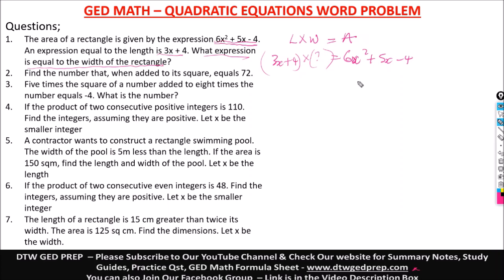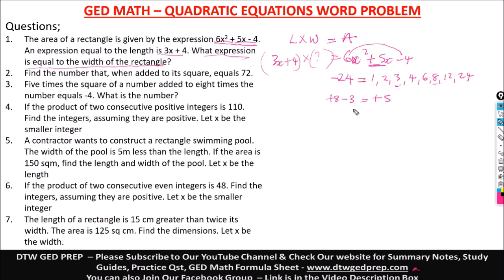If you don't remember how to factor, please watch the factoring quadratic equations video — I think it's two videos before this. To factor 6x² + 5x - 4, we do 6 times -4, which gives us -24. Then we find factors of -24: 1, 2, 3, 4, 6, 8, 12, and 24. Out of these, what two factors can we add or subtract to get positive 5, and multiply to get -24? That's positive 8 and negative 3: 8 + (-3) = 5, and 8 × (-3) = -24.